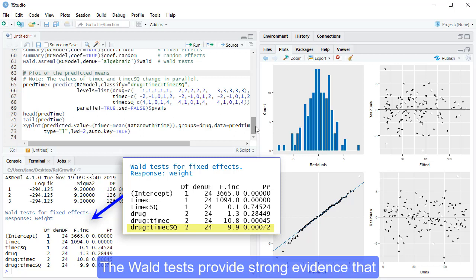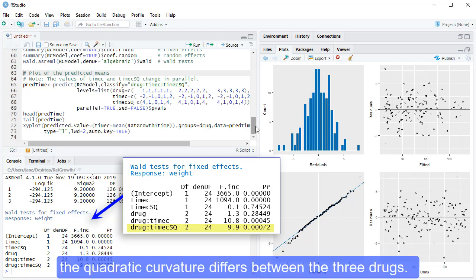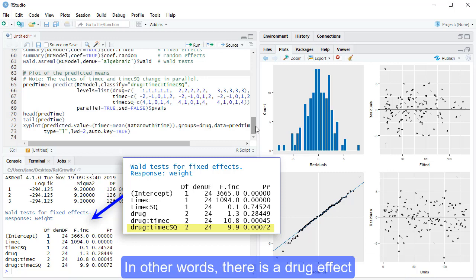The Wald tests provide strong evidence that the quadratic curvature differs between the three drugs. In other words, there is a drug effect on the growth rate of rats.